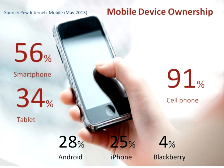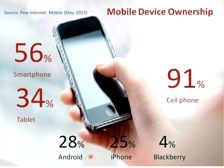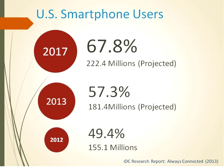Current trends: according to Pew Internet studies in May 2013, ownership of mobile devices has gone up. 56% of the population owns a smartphone, 34% owns a tablet, and 91% of the population surveyed owns a cell phone. Approximately, for different mobile platforms: Android 28%, iPhone 25%, and Blackberry 4%. This gives you an overview of how widely used smartphones are.